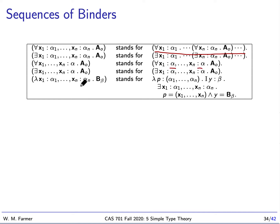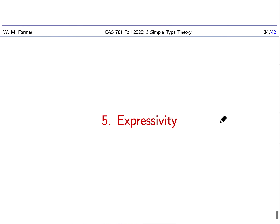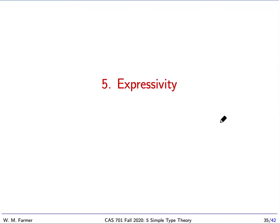This notation is very interesting because it defines a function that takes a tuple where the members are X1 through Xn. So that stands for the function that takes a tuple P and returns the unique Y such that there exist X's so that P equals these X's, and Y would be the value of B. So that completes our lecture today, and we will continue next time with expressivity in Alonzo. Thank you very much. See you next time.